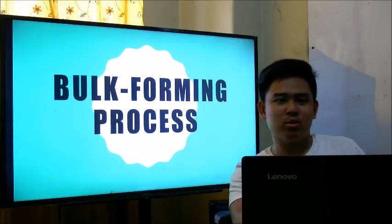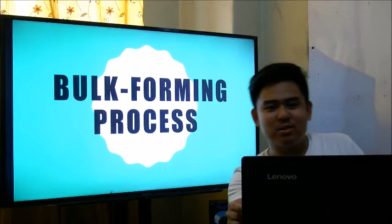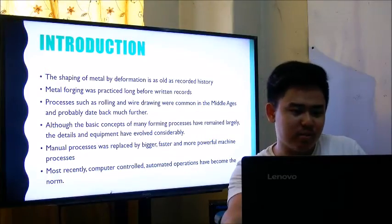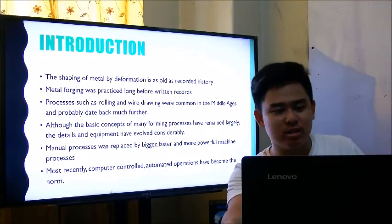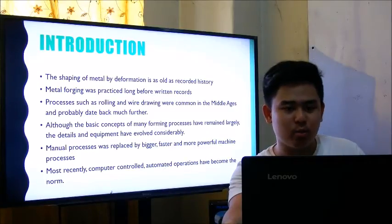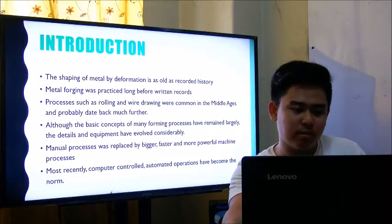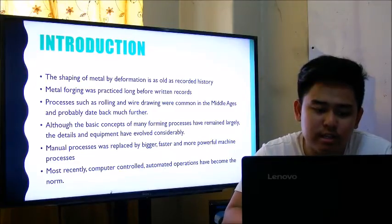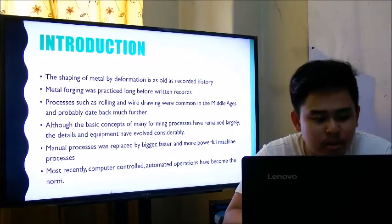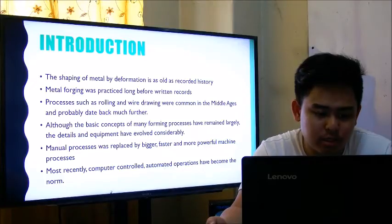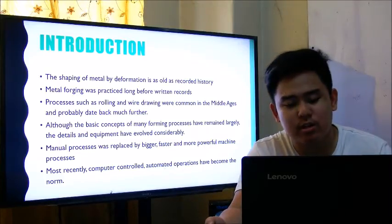We move now to chapter 16, the bulk forming process. Shaping of metal by deformation is as old as recorded history; metal forging was practiced long before written records. Processes such as rolling and wire drawing were common in the middle ages and probably date back much further. Although the basic concepts of many forging processes remain largely unchanged, the details and equipment have evolved considerably — manual processes were replaced by bigger, faster, and more powerful machines. Most recently, computer-controlled automated operations have become the new norm.